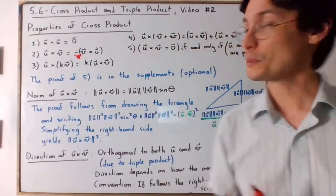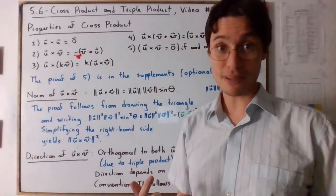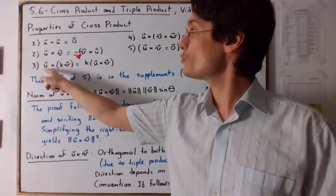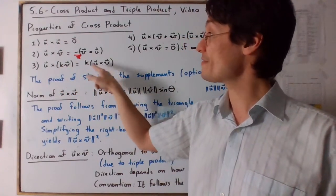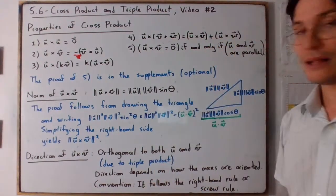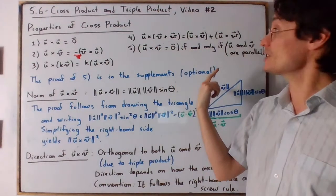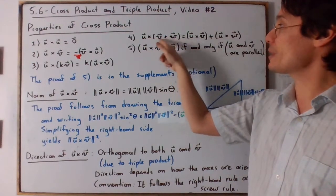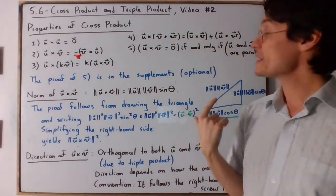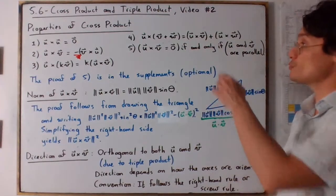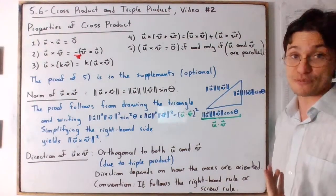The third property is associativity with scalar multiplication. So if you do u cross kv it's going to be the same as doing u cross v first and then multiplying by k. The fourth property is distributivity over addition — if you add v and w first and then take the cross product with u, it gives the same result as cross producting u with v and u with w separately and adding the results.